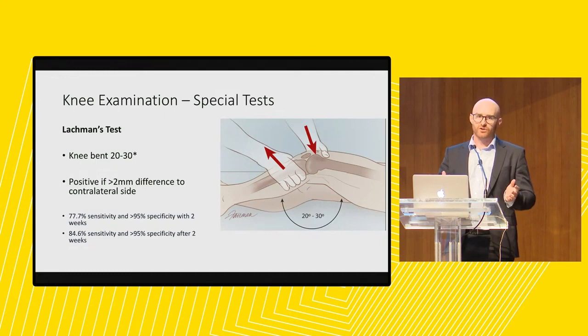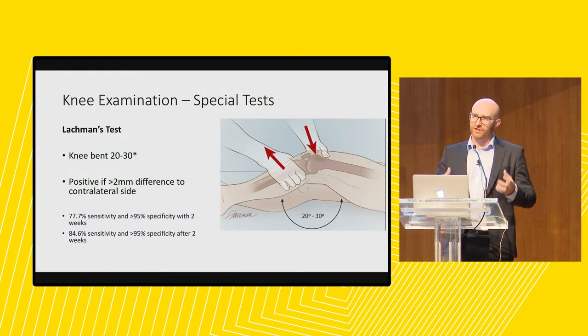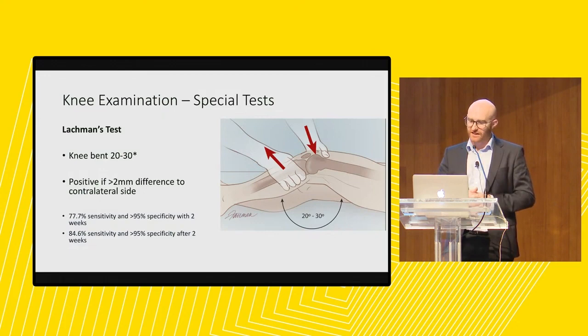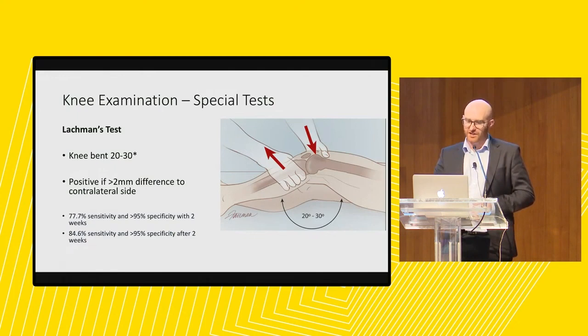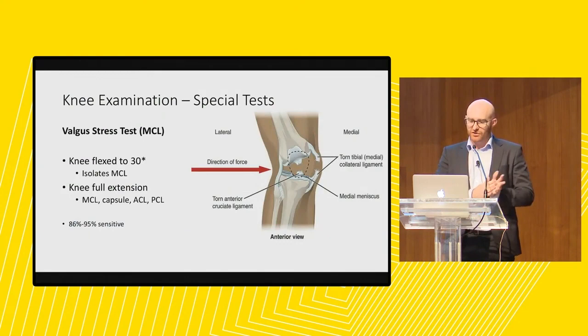Lachman's test, with the knee bent 20–30 degrees, looks for a difference of 2mm to the contralateral side. The challenge is that kids are getting bigger and bigger — often 80, 90 or 100 kilos of solid muscle. If you don't have big enough hands, Lachman's test is really difficult to do consistently on large teenage rugby players. I find the easiest way is to bend the knee over the side of the bed or put my knee underneath their knee to hold it, leaving two hands free. It's much more sensitive and specific than the anterior drawer.